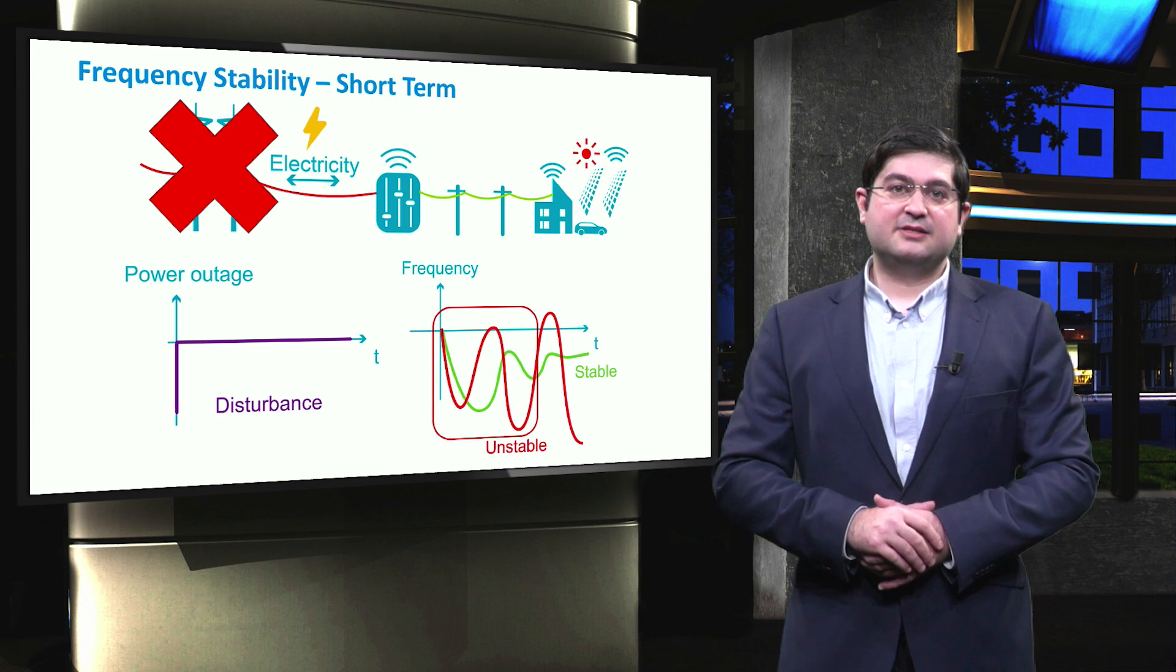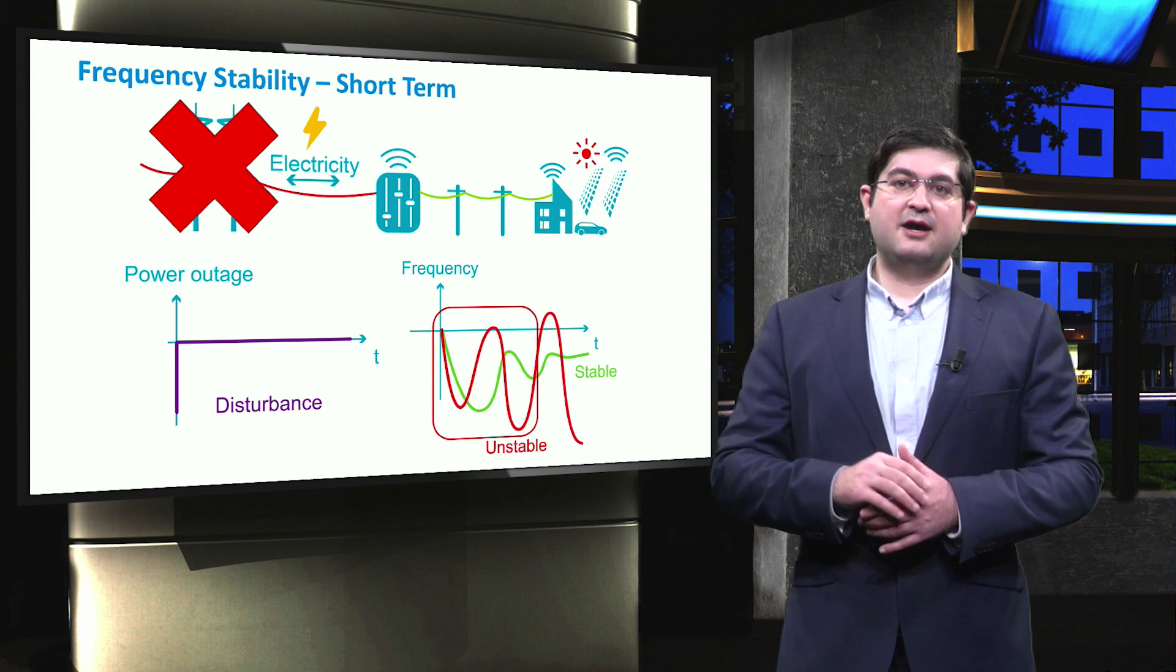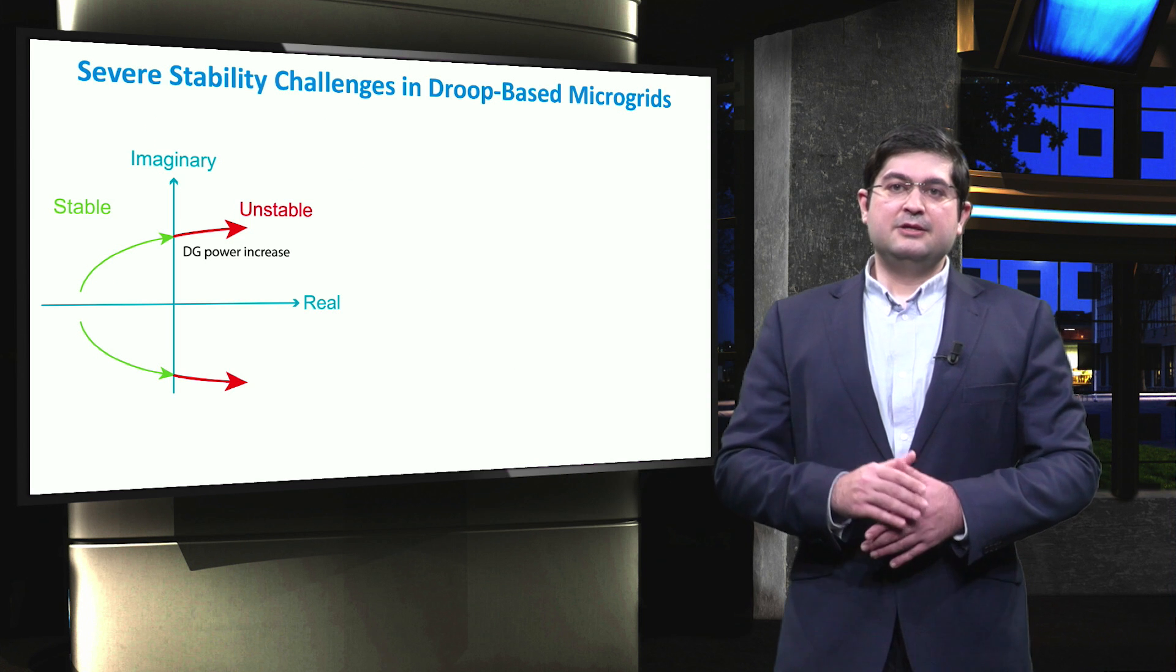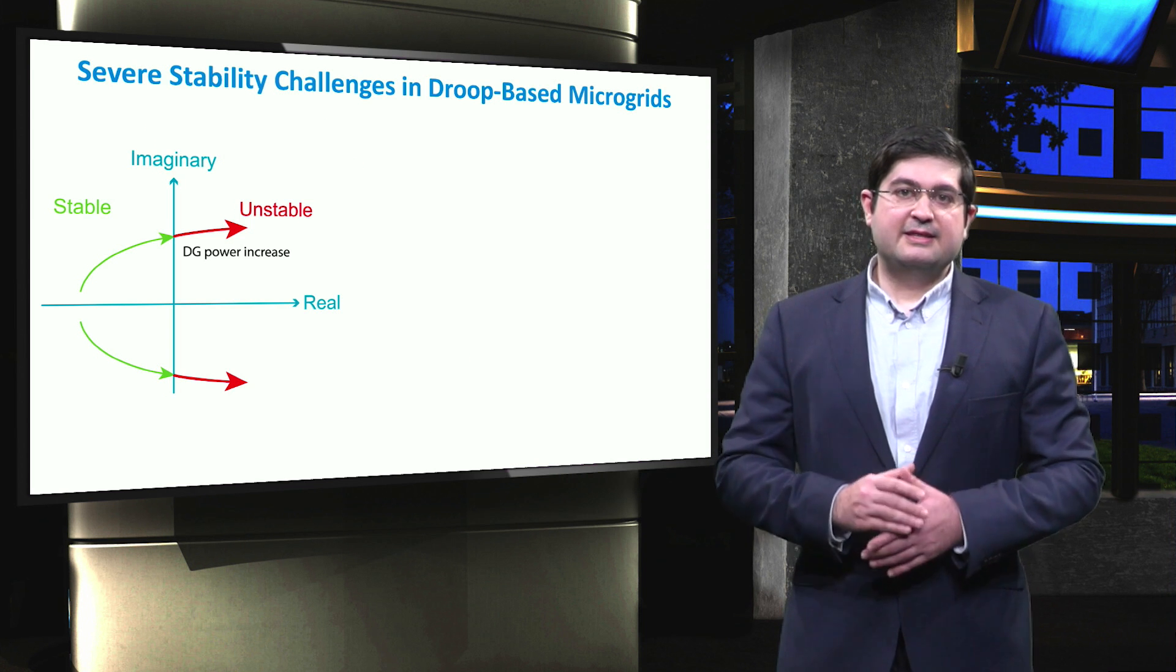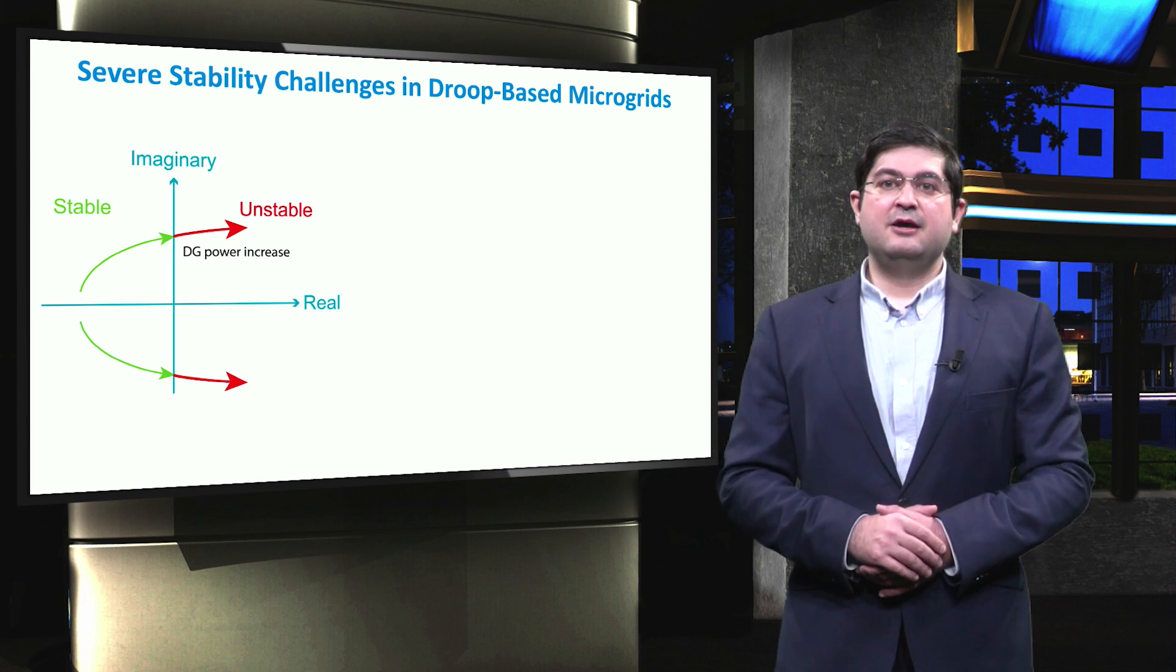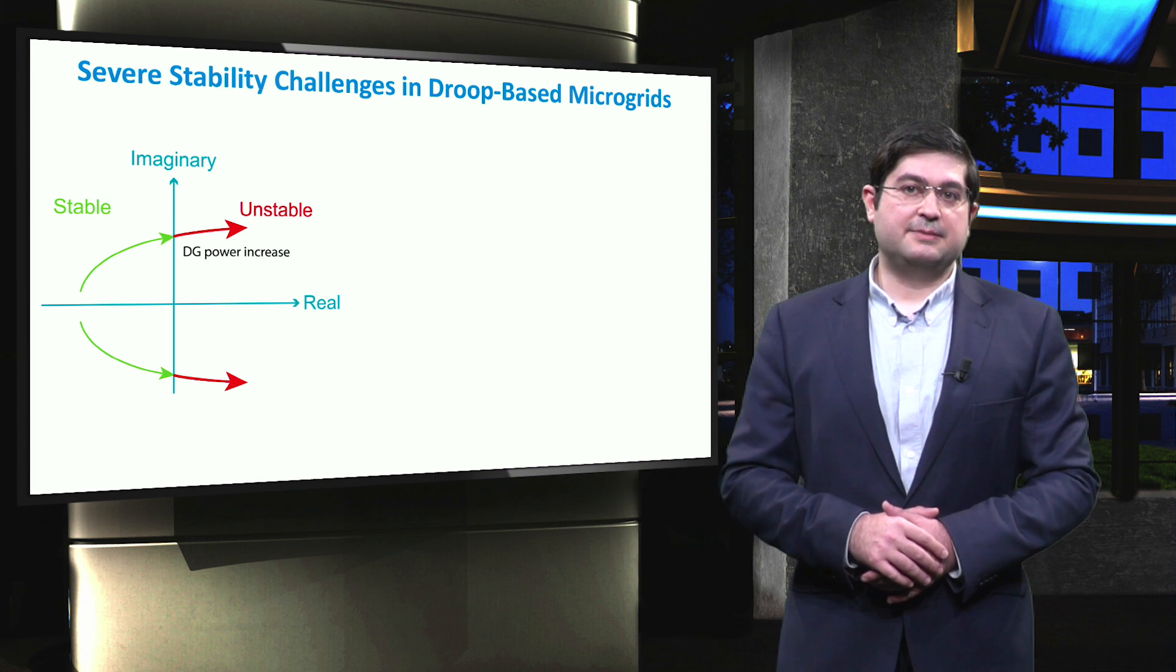If the frequency does not reach a stable point after the disturbance, then the islanded microgrid is shut down. Though the droop control is simple to implement, it has many disadvantages for droop-based microgrids such as poor transient performance or possible frequency instabilities.